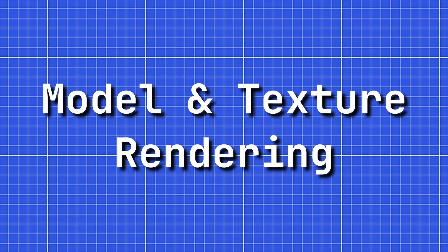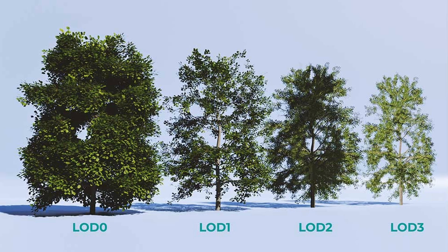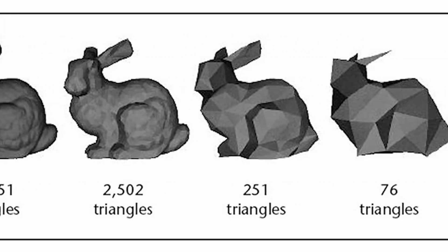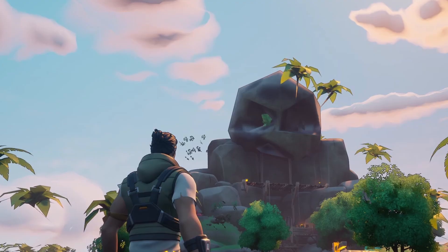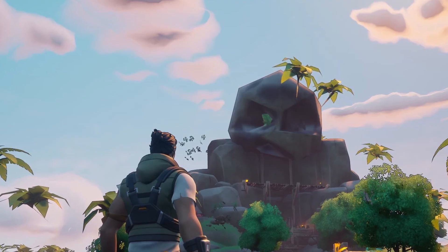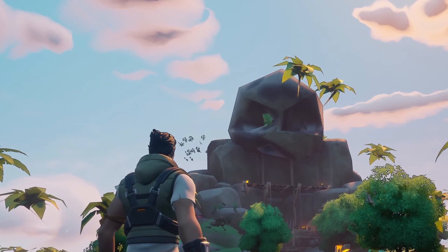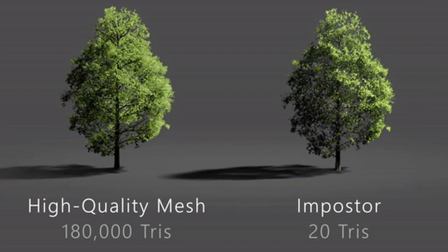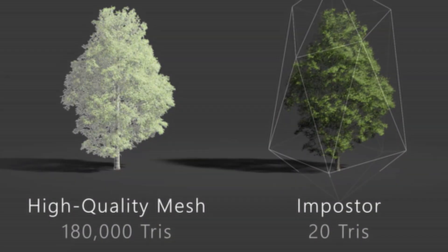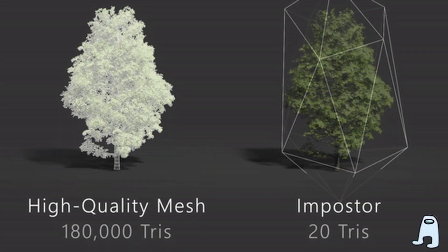Model and texture rendering: Level of Detail, also known as LOD, is a way for games to define different quality meshes depending on view distance. The further away something is, the lower the resolution and vertex count it can have. Sometimes it can just be rendered as a quad, also known as an impostor.